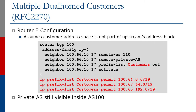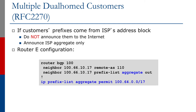What about Router E connecting to the rest of the internet? If we assume that the customer address space is not part of the upstream provider's address block, then the outbound prefix list would of course need to list each prefix that each customer has, and we strip out the private AS as we've done before. However, if the customer prefixes actually come from the ISP's address block, then we don't need to announce these sub-prefixes to the internet — the ISP aggregate is more than sufficient. Because the rest of the internet does not care about the detailed traffic engineering between the customer and the service provider. So as the example shows, the Router E configuration is just a simple announcement of the ISP's aggregate out.